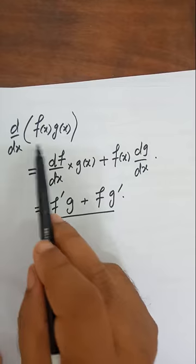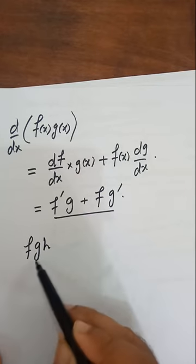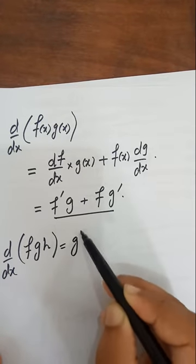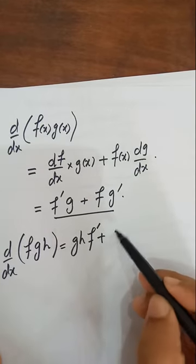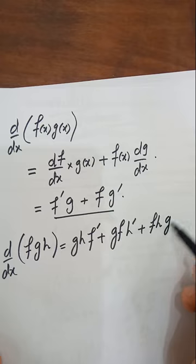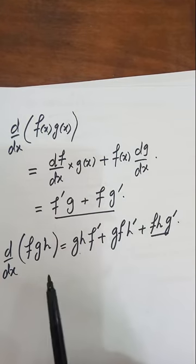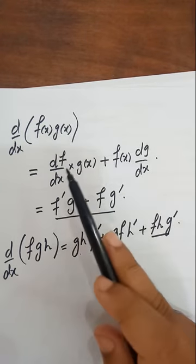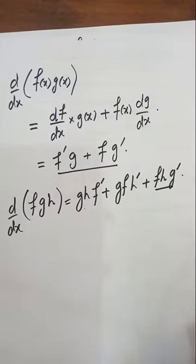You can prove this from the first principle rule as well. The product rule can be further extended: if you have three functions f, g, and h all depending on x and all in product, then differentiate one at a time — two functions as it is and differentiate one, then plus two functions as it is and differentiate another, and so on. So the product rule extends to any number of functions in product.